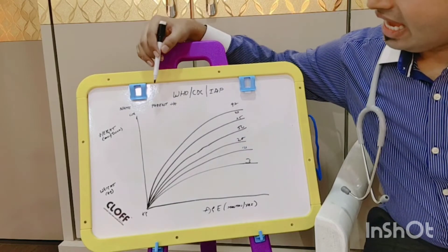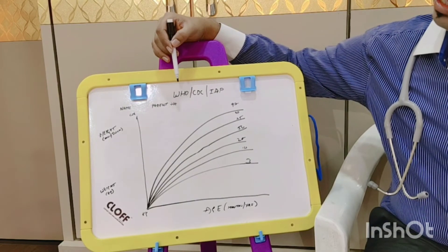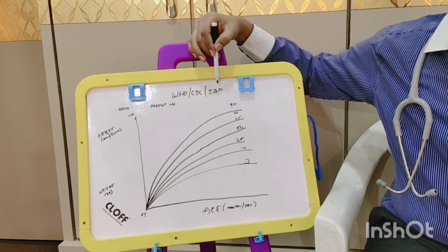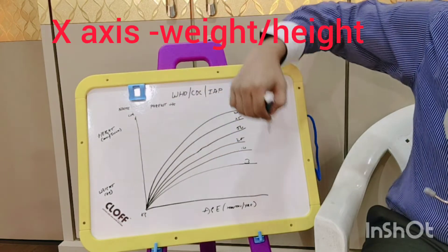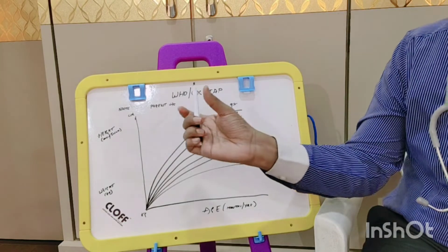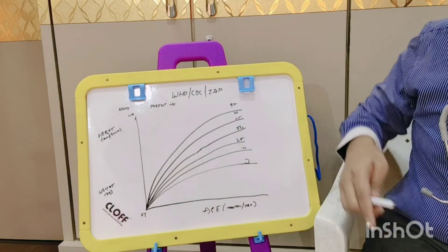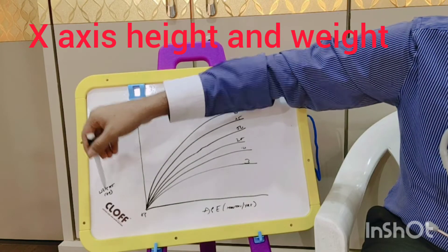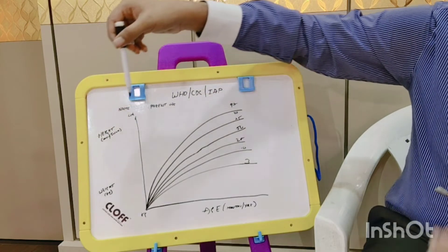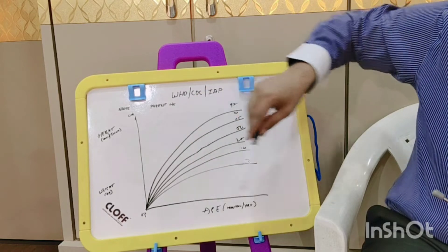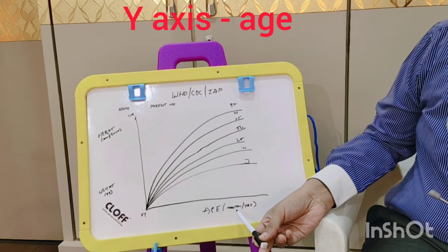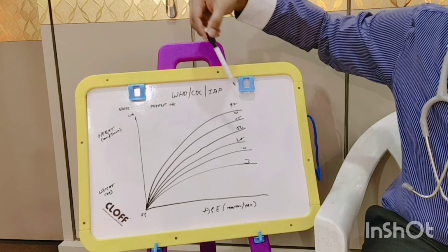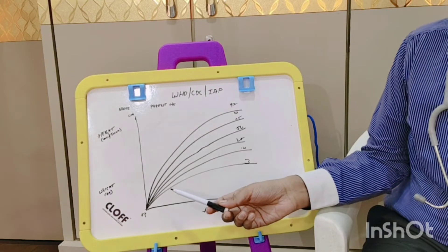This is an explanatory growth chart. Available growth charts are from WHO, CDC, or IAP which is available in India. In this growth chart, there are various parameters. On the x-axis, you can note the weight in kilograms or height in centimeters. On the y-axis is the age of the child in months or years. The demographic details are mentioned here with name, parents' height, mother's height, father's height, etc.